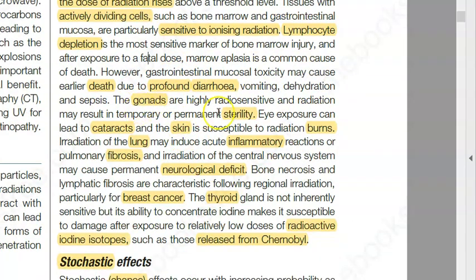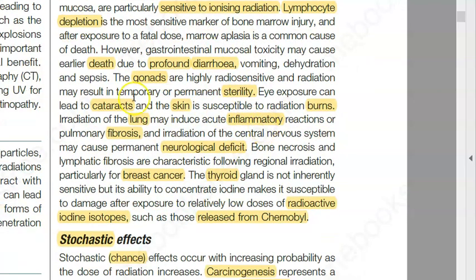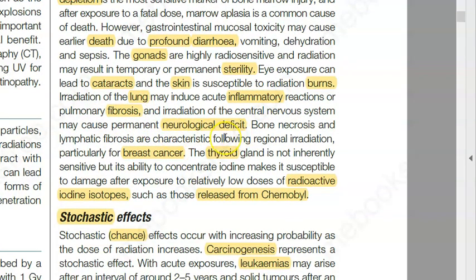Gonads are also very sensitive, so there can be sterility. The eye can develop cataracts. Skin can get burnt due to radiation. The lung can have an inflammatory reaction leading to pulmonary fibrosis. CNS effects include neurological deficit. There can also be cancers such as breast cancer — interestingly placed under deterministic effects. The thyroid gland is not that sensitive, but exposure to radioactive iodine isotopes can damage it, as seen in the Chernobyl reactor disaster.